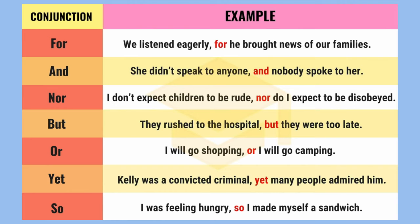A lot of coordinating conjunctions are known as FANBOYS: For, And, Nor, But, Or, Yet, and So. These can be used to connect independent clauses. Feel free to pause and read some of the examples. Note that the comma goes before the conjunction, just like we mentioned earlier.